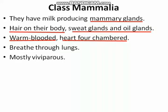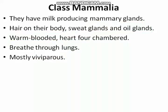Mammals breathe through lungs and are mostly viviparous, meaning they give birth to young ones. However, some organisms in class Mammalia are oviparous — for example, platypus and echidna (also called anteater) lay eggs. Others like kangaroos give birth to very poorly developed young ones. So class Mammalia includes a very diverse type of organisms.